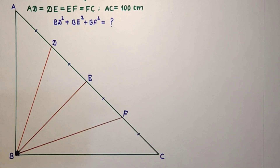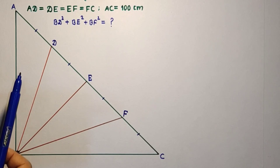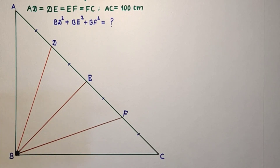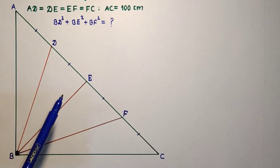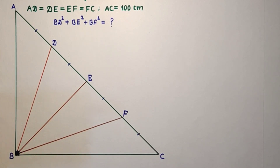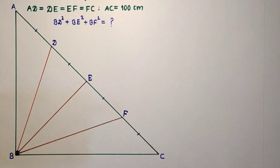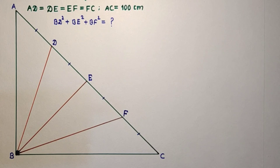Triangle ABC is a right angle triangle, right angle at B. D, E and F are three points such that AD, DE, EF and FC are equal, and the whole length of AC is 100 centimeters. So AD = DE = EF = FC = 25 centimeters each.